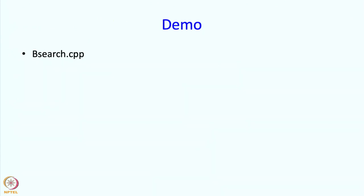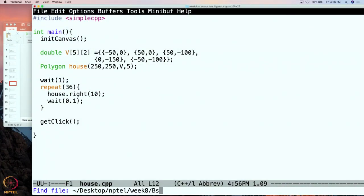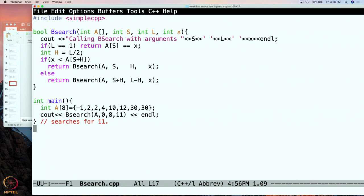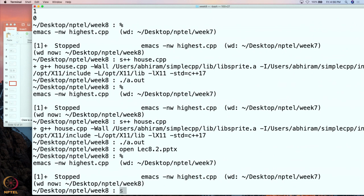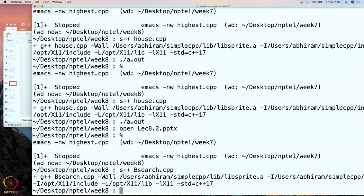So let us do a quick demo of this. So the function is bsearch, so let me show it to you. So this is bsearch and bsearch is the same as what I have shown you but the only thing is I am writing over here what the arguments are, just to see how the function executes. So let us compile it and run it.